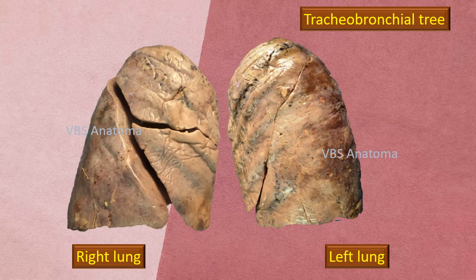Here is the costal surface of both lungs — right lung and left lung. You can see the oblique fissure in both lungs beautifully. In addition, on the right side only, the horizontal fissure is also visible. Now we need to map the tracheobronchial tree into the parenchyma of the lung — that is the objective.